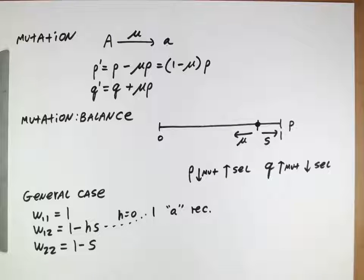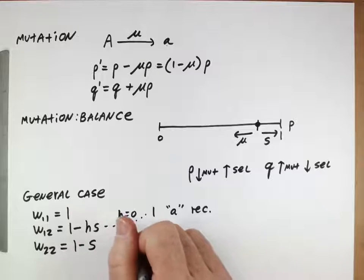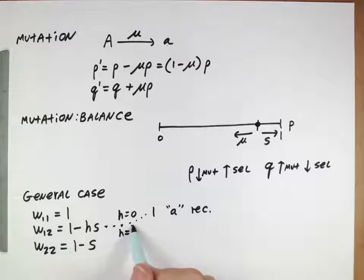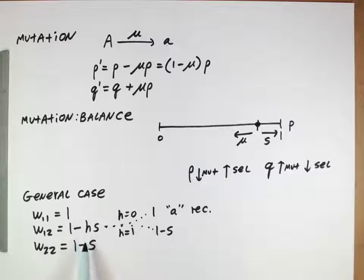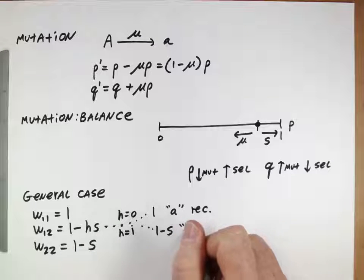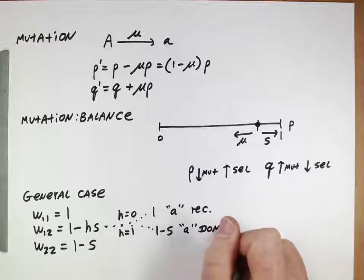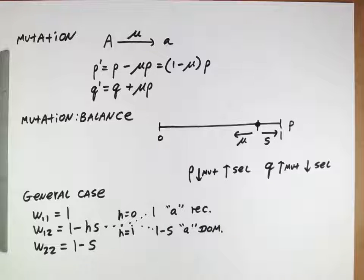So if you think about it, if h is equal to zero, then this fitness becomes just one, and that means that this lowercase allele is recessive, because having one copy does not change the fitness. You have to have two copies to change the fitness. On the other hand, if this value of h is equal to one, then that fitness becomes 1 minus s. So having one copy is just as bad as having two copies, so the lowercase allele would be dominant. So even though it is deleterious, it can also be dominant if this h value is one.